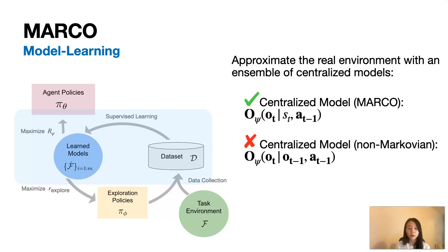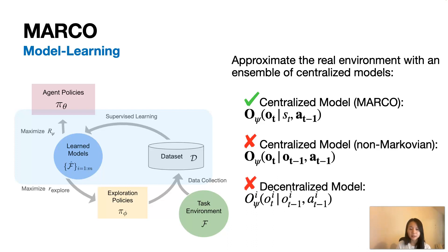In addition, the Marco model is also stationary since environment dynamics are assumed to be stationary in the DECPOMDP. This is as opposed to learning a decentralized model that outputs agents' individual observation conditioning on the individual action observation history. The decentralized model is not stationary because it depends on the policy of other agents. So whenever the policies are updated during training, the decentralized model needs to be relearned as well, which is not optimal.